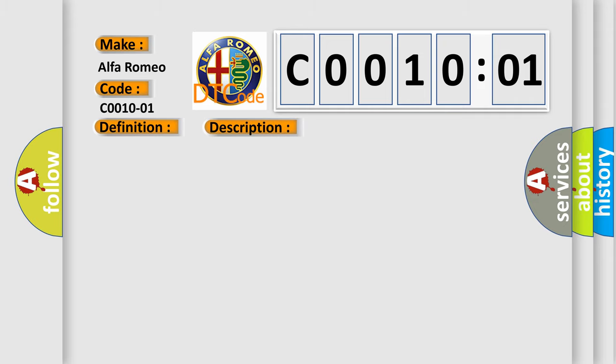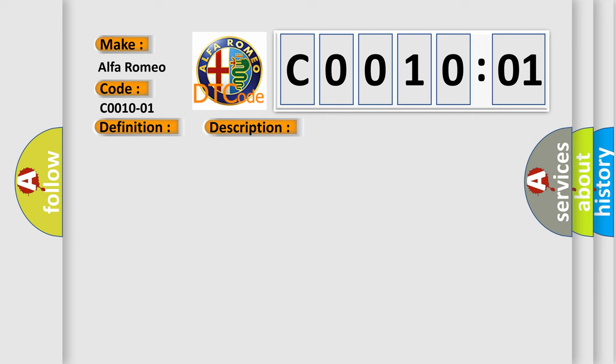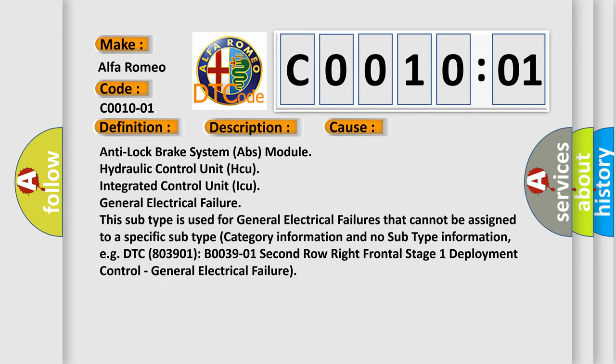And now this is a short description of this DTC code. Engine running and brake supplied Anti-lock brake system ABS module is unable to activate the correct solenoid valve. This diagnostic error occurs most often in these cases.